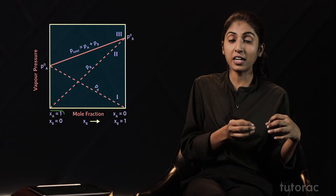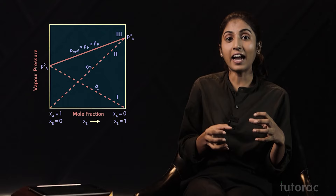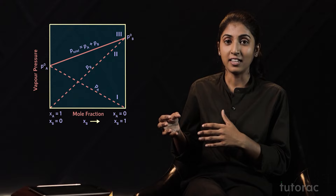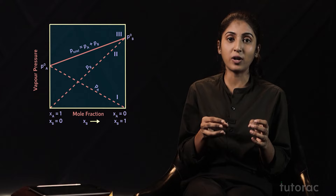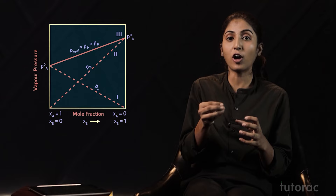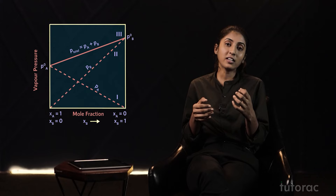At the leftmost corner of the graph, the mole fraction of A, χ_A, equals 1 and χ_B equals 0. As we move towards the right, χ_B increases while χ_A decreases, until at the rightmost part χ_B equals 1 and χ_A equals 0. When χ_A equals 1 the partial vapor pressure equals P°_A, and when χ_B equals 1 we get P°_B.